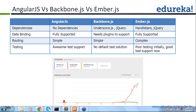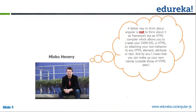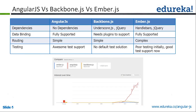A question about data binding: whenever we get a particular data object from the server, we have to bind it in the UI. AngularJS gives two-way binding support. With jQuery you would have to read the data and bind it to HTML via class or ID, but in AngularJS you don't need to do that. Whenever you update your model, it automatically updates the view.